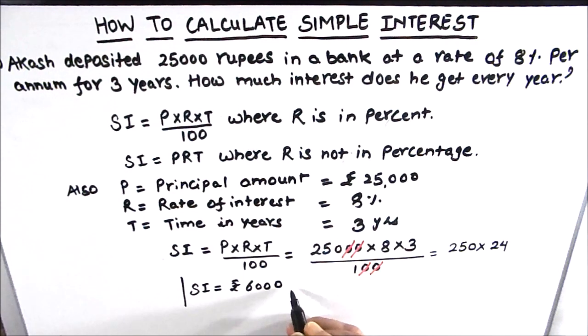And this is per year. In one year he will get an interest of 6,000 on rupees 25,000. And for 3 years he is going to get 6,000 times 3, which is 18,000 rupees extra on depositing 25,000 rupees.